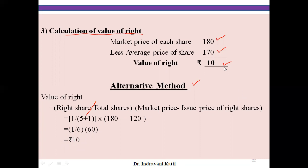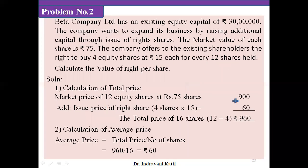Both methods give the same answer. Whichever method you find easy, you can go for that calculation. In the three-step method, we solve the problem in three stages; in the alternative method, it can be done in one step. Whichever method you use, you will get 5 marks. Practice it.